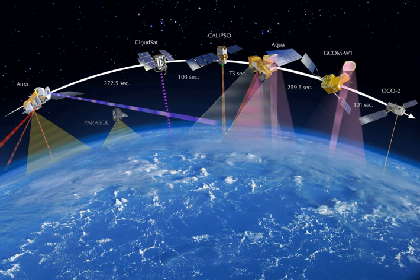Most Earth observation satellites carry instruments that should be operated at a relatively low altitude. Altitudes below 500 to 600 km are in general avoided, though, because of the significant air drag at such low altitudes, making frequent orbit re-boost maneuvers necessary.